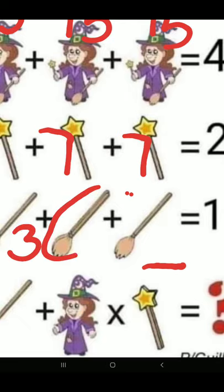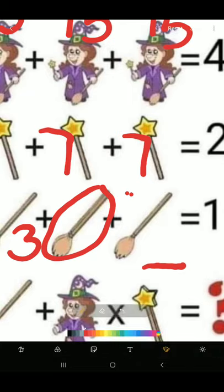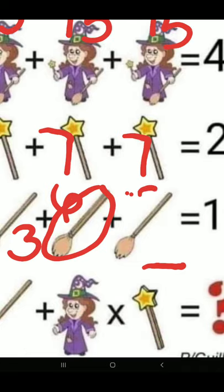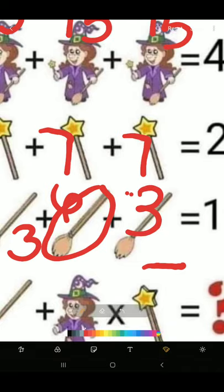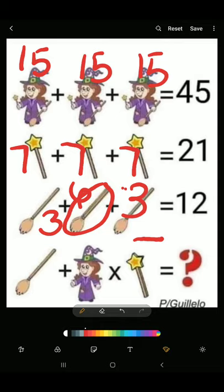This right here is 2 brooms, so it's worth 6. And this is just 1, so it's worth 3. I'll try to zoom back out for you. So 3 plus 6 plus 3 equals 12.